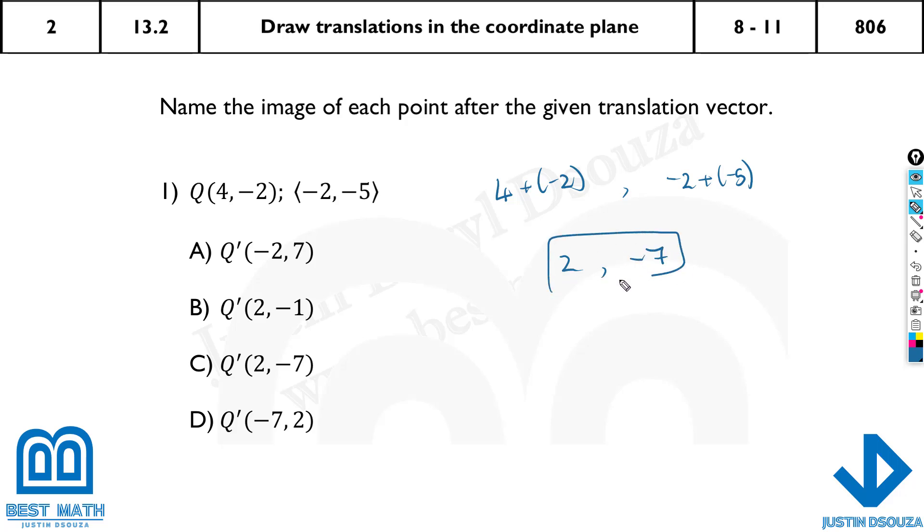So the newly formed coordinates would be 2 and -7. So this would be the newly formed translated image coordinates, that is Q' or Q-prime. This line over here shows that it is the transformed or rotated or newly formed image. Now here we are doing translation, so this is denoting the translation. So the answer would be option C.